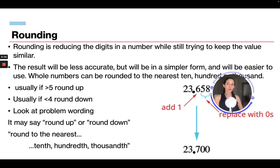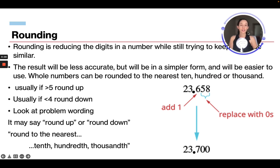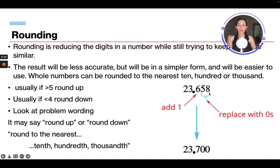Now let's look at rounding. Rounding is reducing the digits in a number while keeping the value similar — results are less accurate but simpler and easier to use. Whole numbers can be rounded to the nearest 10, 100, or 1,000. If the digit is greater than 5, round up; if less than 5, round down. Watch the problem wording — it may say round to the nearest 10th, 100th, or 1,000th. Remember, the 'th' ending means it's to the right of the decimal point.